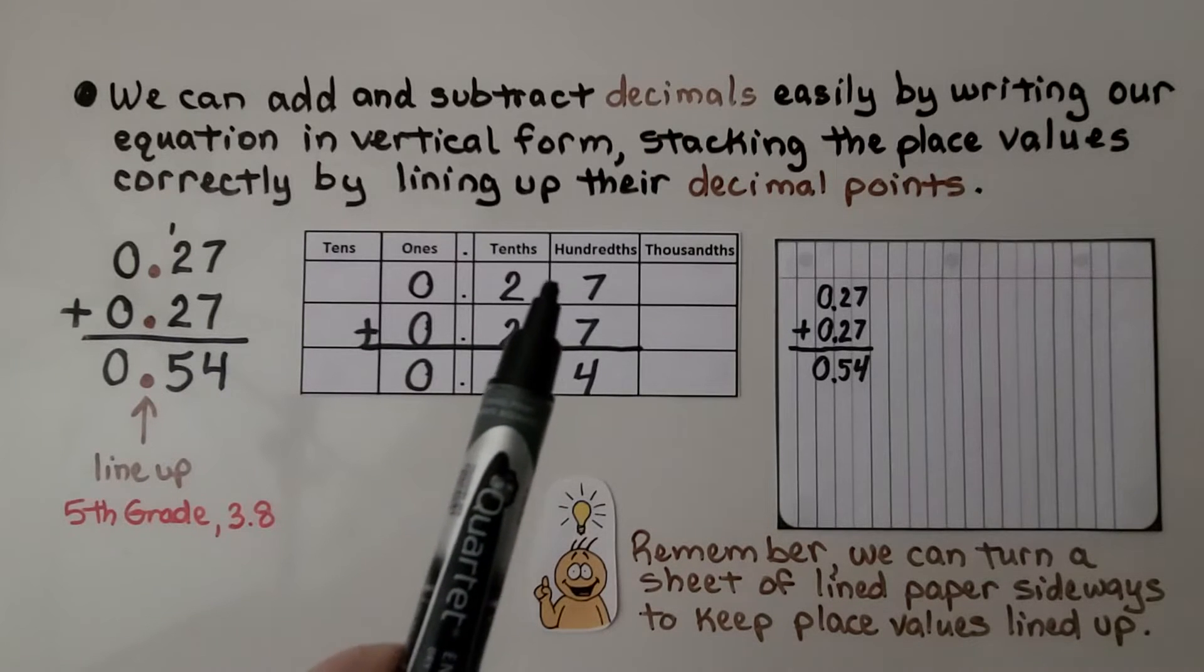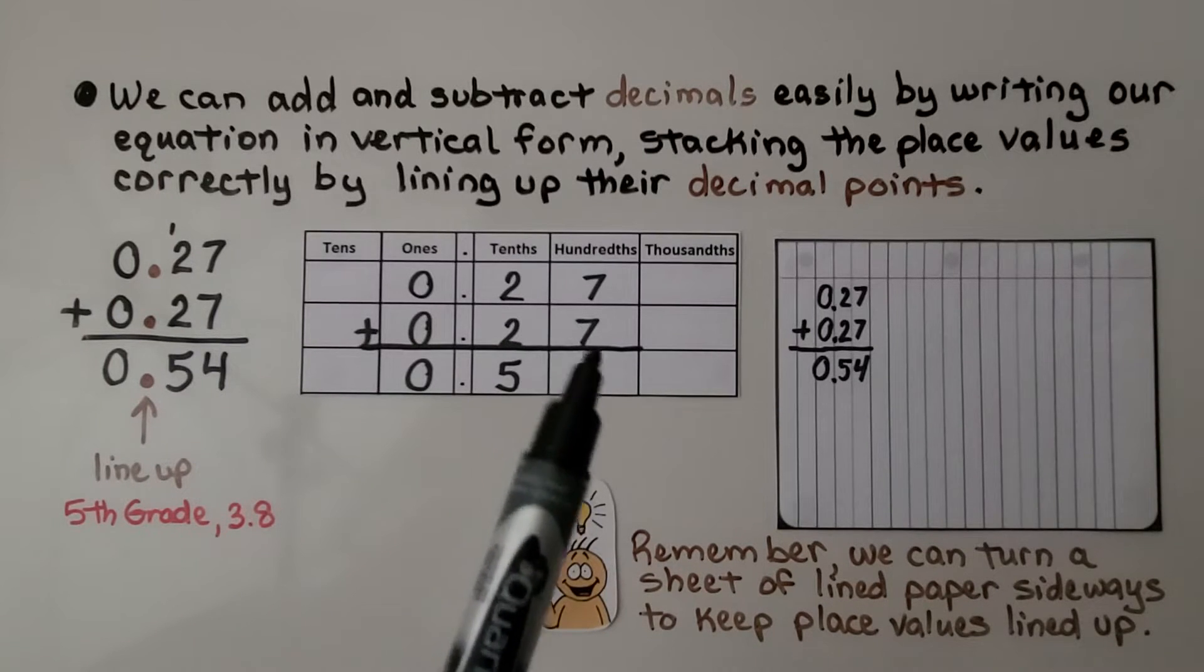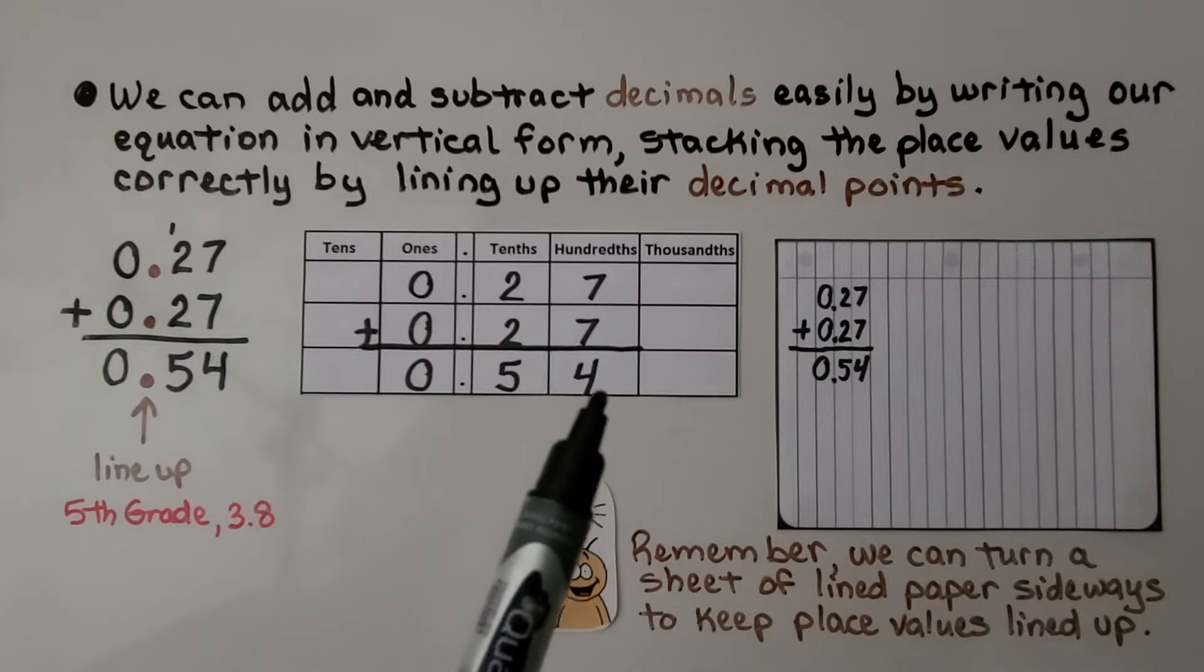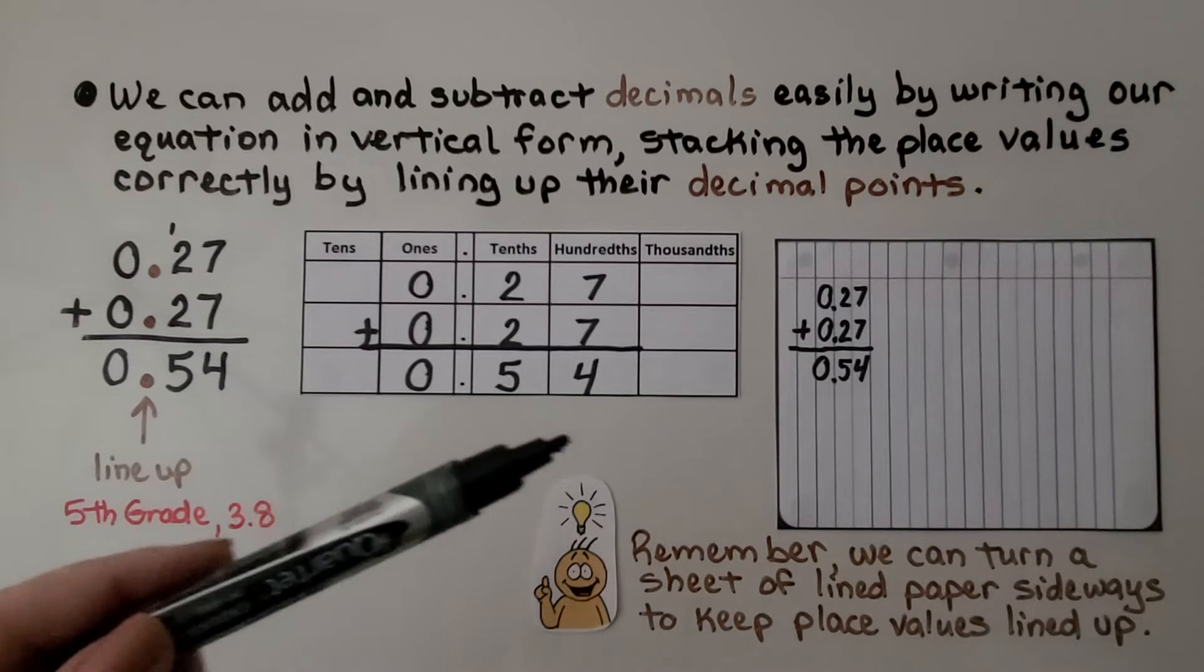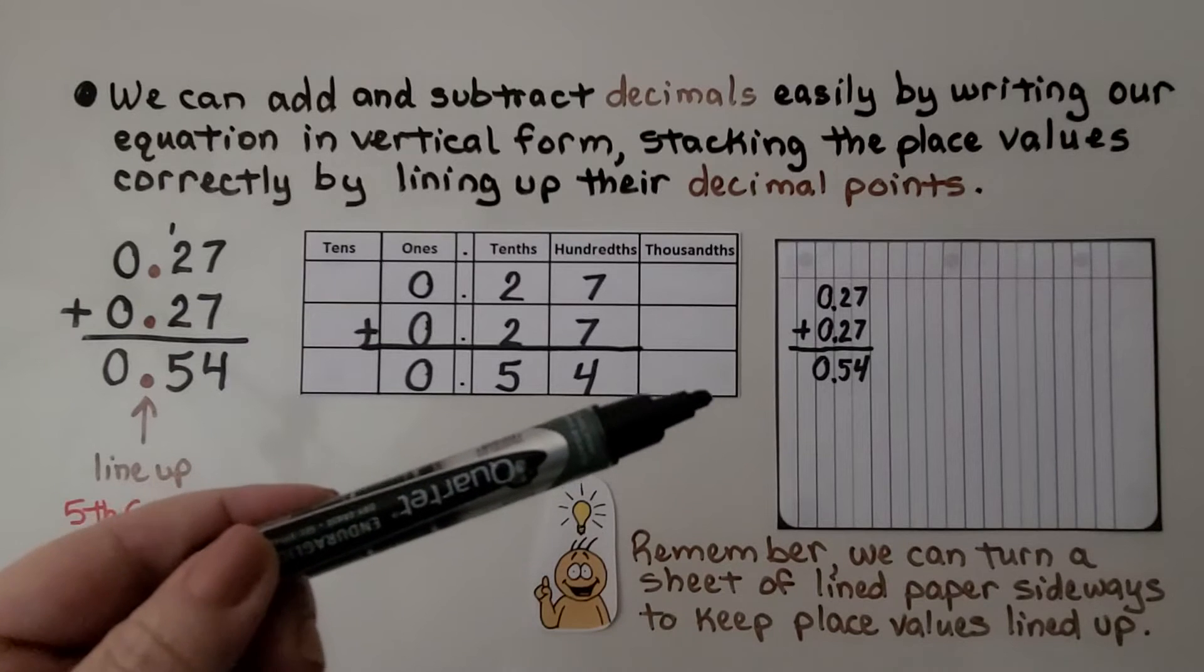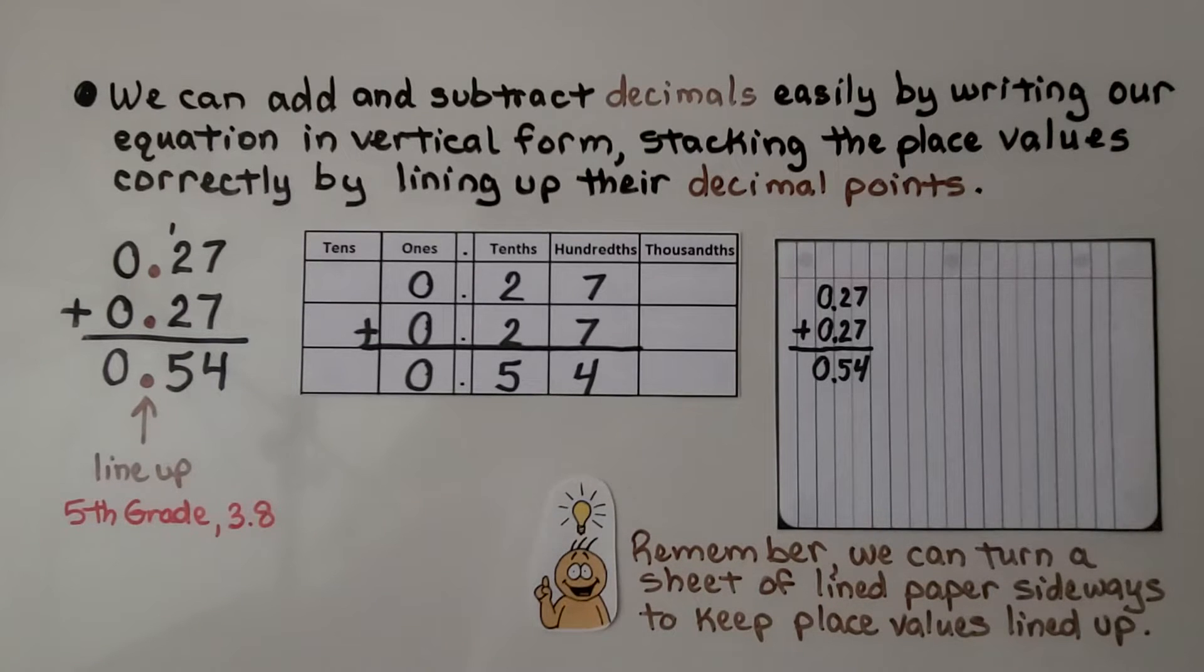We have 27 hundredths plus 27 hundredths. It's equal to 54 hundredths. And remember, we can turn a sheet of lined paper sideways to keep our place values lined up. If you don't have grid paper, you can use a sheet of lined paper. If you don't have lined paper, you can make lined paper.